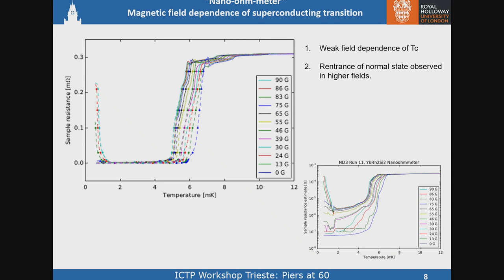When we apply a magnetic field, looking at essentially the sample resistance, we see two things: the transition temperature is pushed down a bit, and in larger fields we see re-entrance of the normal state. This curve shows resistance as a function of temperature on a logarithmic scale — about 0.3 of a milliohm down to about 15–20 nano-ohms, a factor of more than three orders of magnitude change in resistance. To the man in the street, that's superconducting. We've also got some interesting signature at just below 2 millikelvin, which we think is the magnetic transition in the sample.